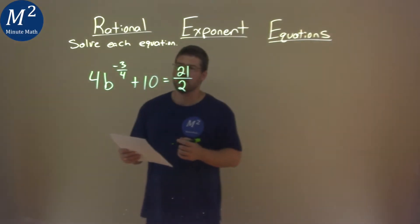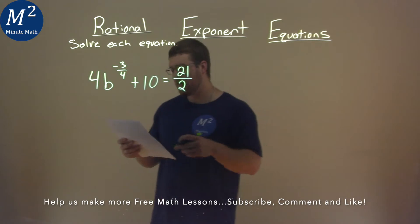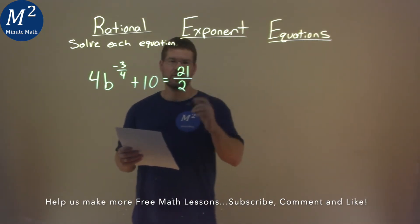We're given this problem right here: 4b to the negative 3 fourths power plus 10 equals 21 over 2, and we're going to solve this equation.